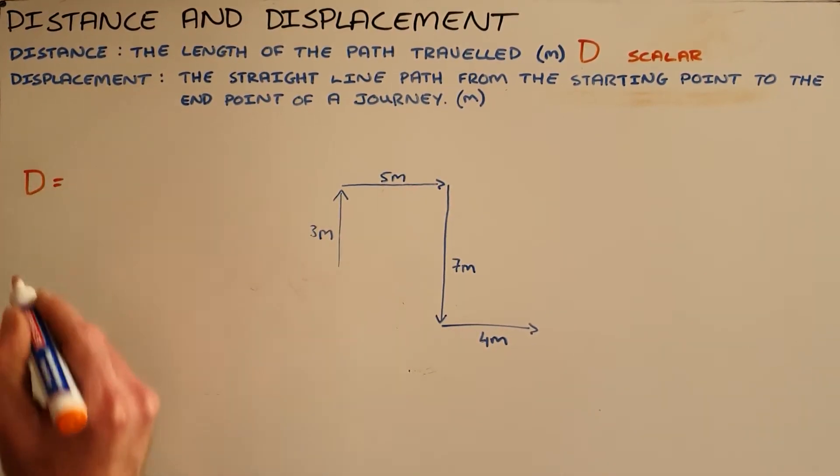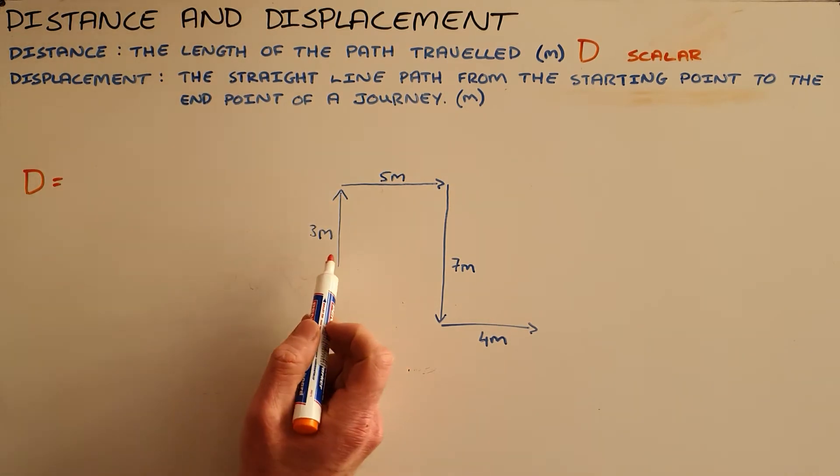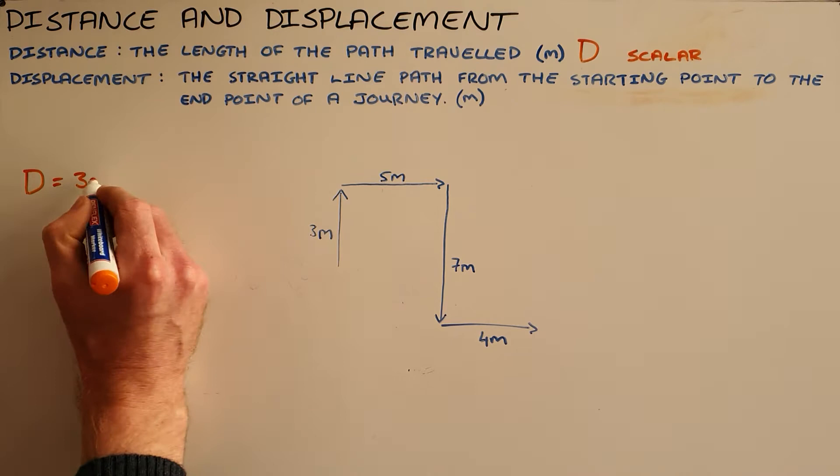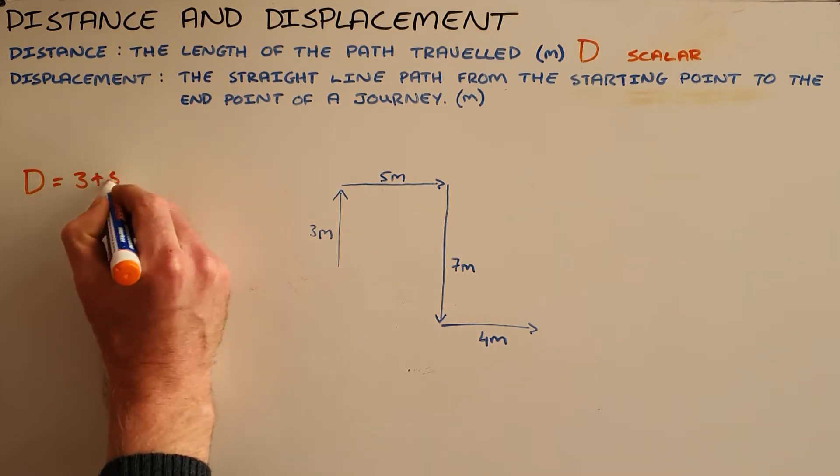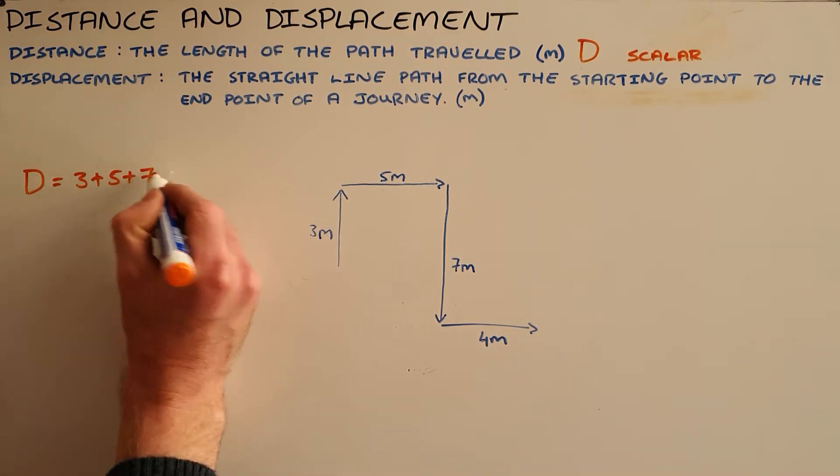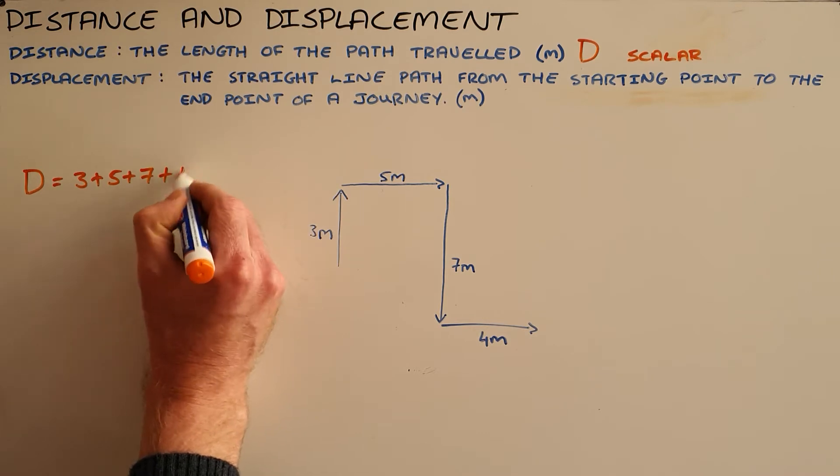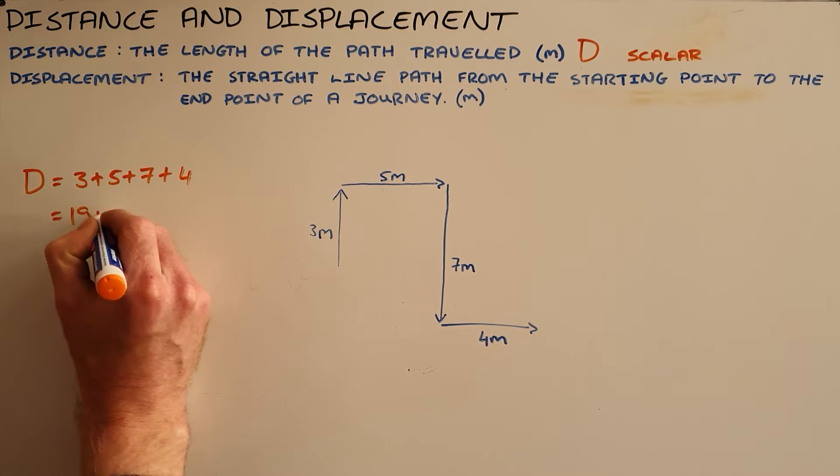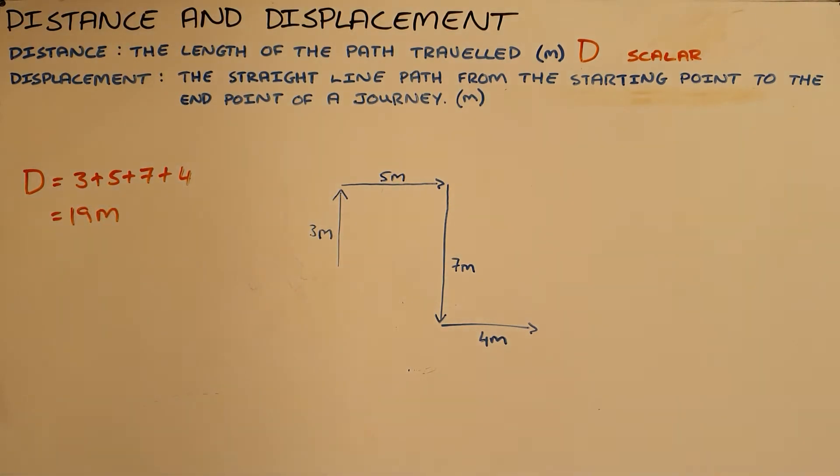The distance is the sum of all those movements: three meters plus five meters plus seven meters plus four meters, which gives us a resultant distance of 19 meters. Since it is a scalar quantity, there is no direction required.